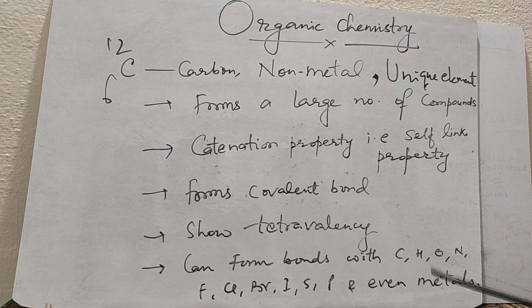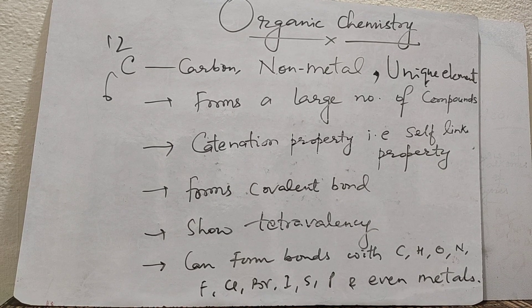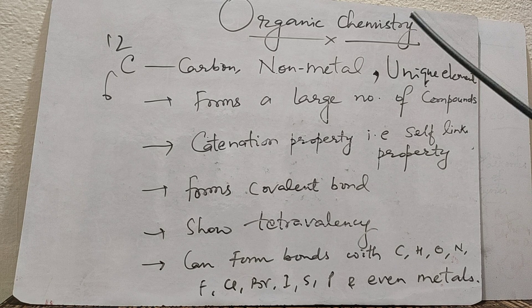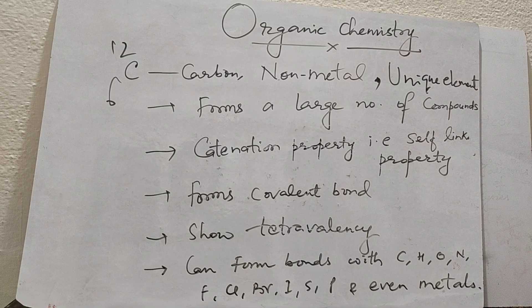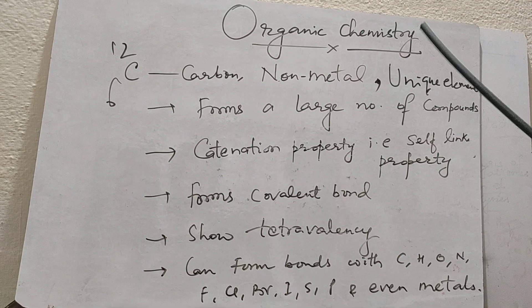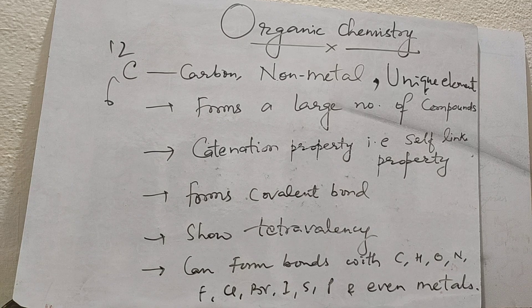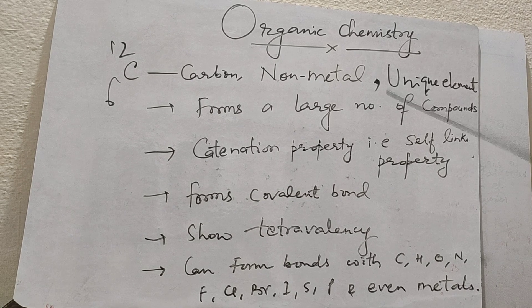And even metals. If carbon forms bonds with metals, we call it organometallic compound. Like one of the most important organometallic compounds is alkyl lithium, alkyl magnesium halide also called Grignard reagent.